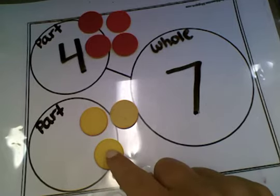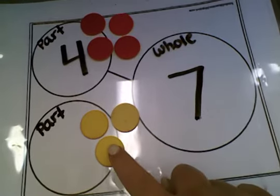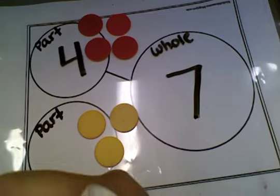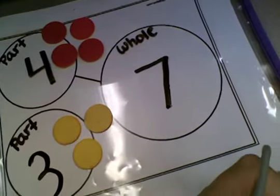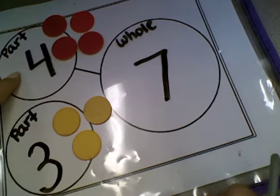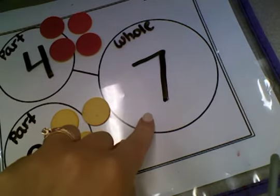Now I can go back and count these up. One, two, three. I needed three more chips to get to seven from four. Four and three make seven.